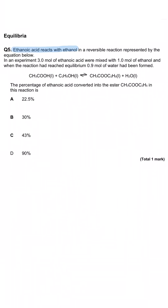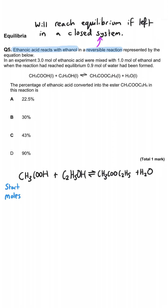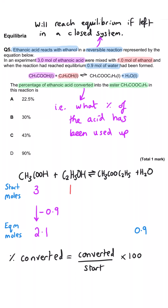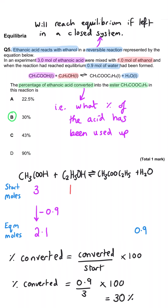Ethanoic acid reacts with ethanol in a reversible reaction. In an experiment, three moles of ethanoic acid were mixed with one mole of ethanol, and when the reaction reached equilibrium, 0.9 moles of water had been formed. The percentage of ethanoic acid converted into the ester is? Since 0.9 moles of water were produced, 0.9 moles of ethanoic acid were used up out of three. So 0.9 divided by 3 multiplied by 100 gives a percentage conversion of 30%, meaning 70% of ethanoic acid remains. So B is the correct answer.